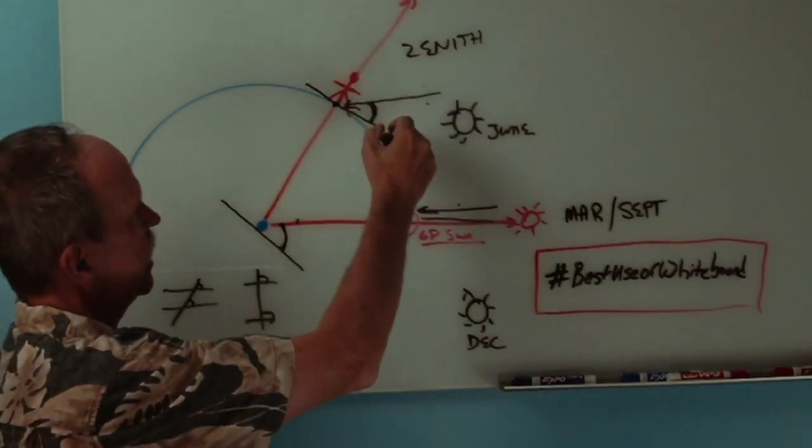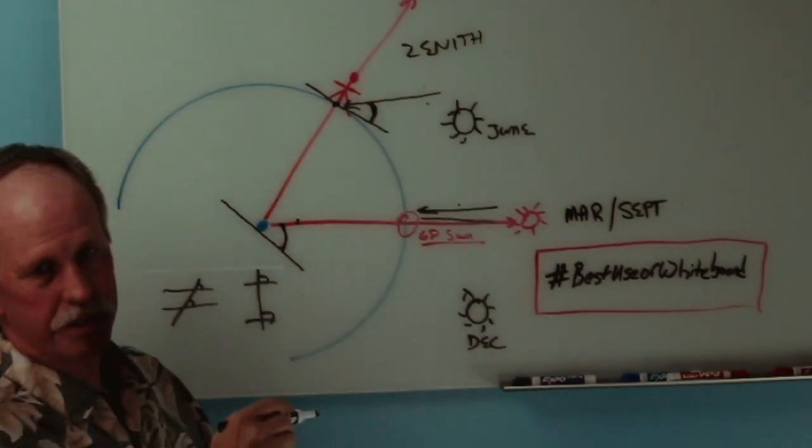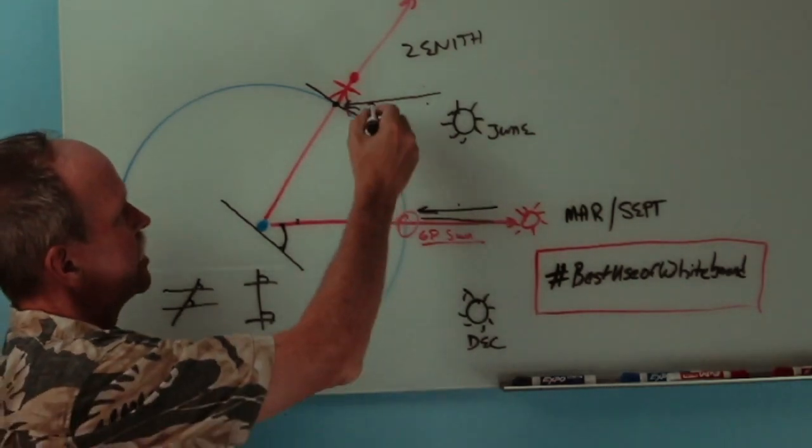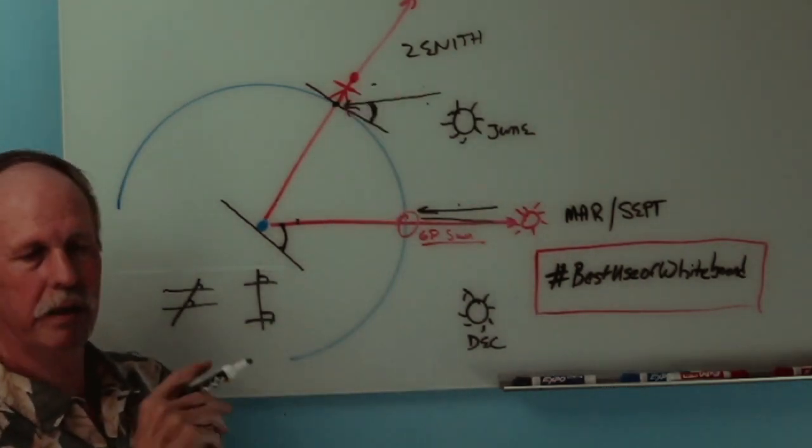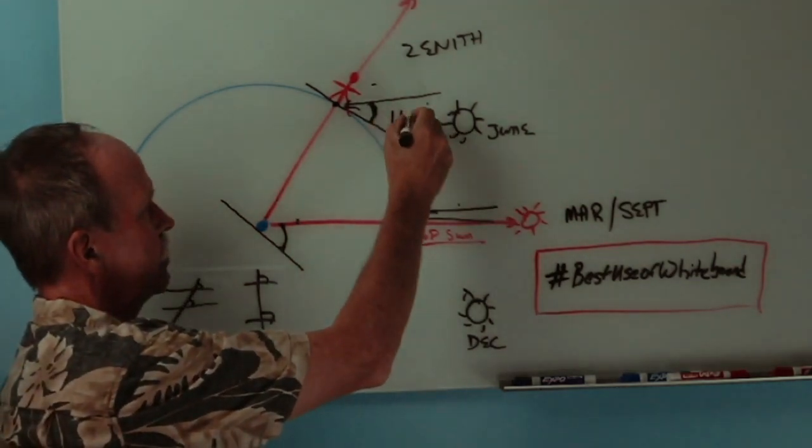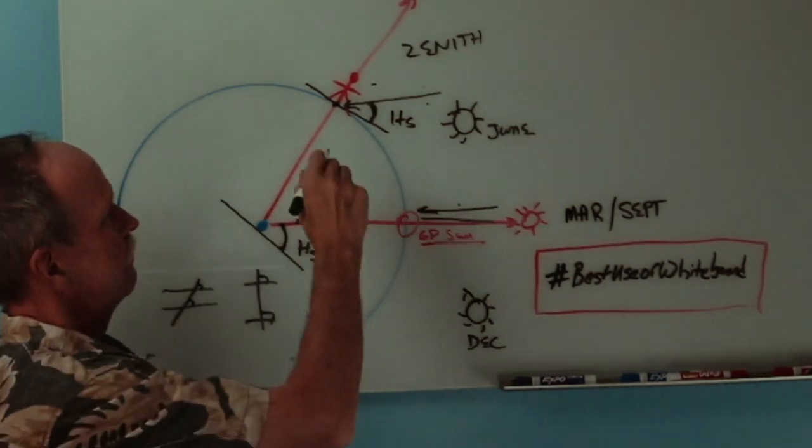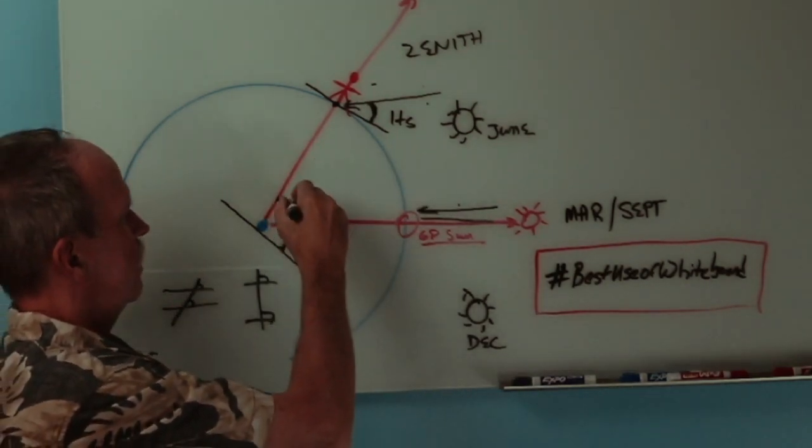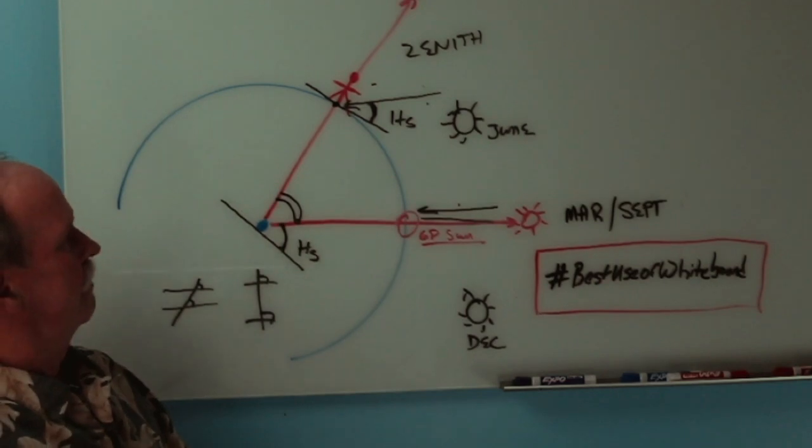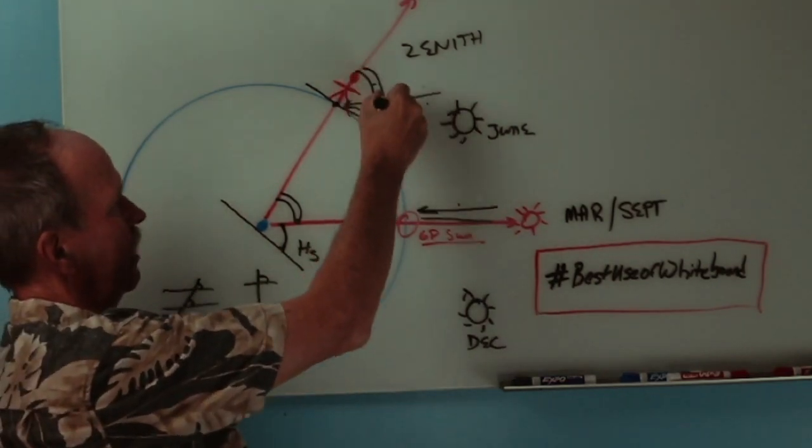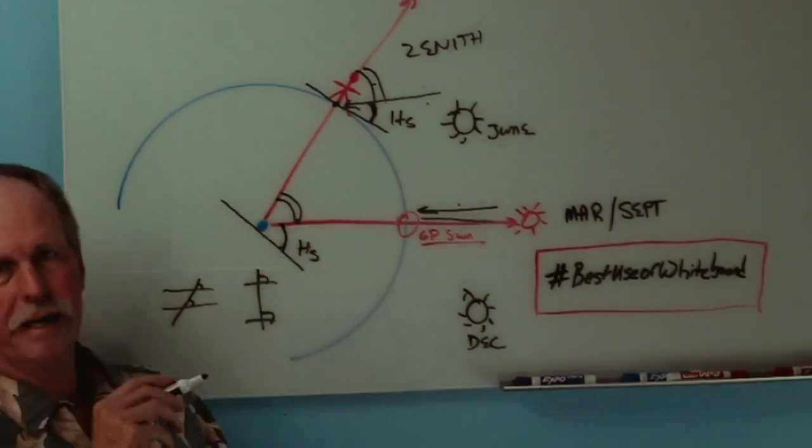Now, this is a 90 degree angle to our horizontal line. So, what is this angle right here? Well, it's 90 degrees minus HS, which is the angle we measure from our sextant. If we subtract that from 90, we get that angle right there. And that would be that angle right there. That determines our latitude.